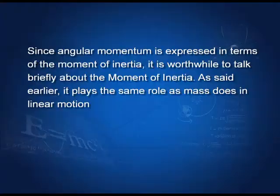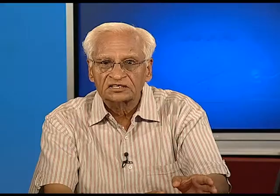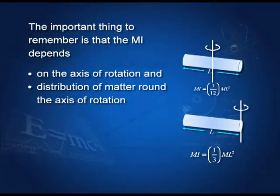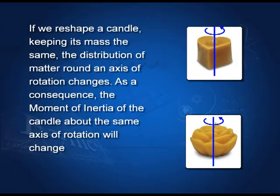Since angular momentum is expressed in terms of moment of inertia, it is worthwhile to discuss moment of inertia briefly. First, moment of inertia depends upon the axis of rotation — change the axis and the moment of inertia changes. It also depends upon the distribution of matter around the axis of rotation. For example, the same amount of wax reshaped changes its distribution around the axis, and therefore its moment of inertia also changes.